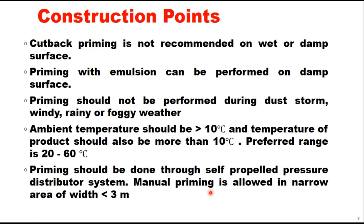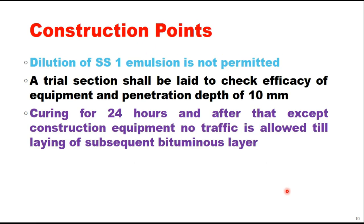Priming should be done through a self-propelled pressure distributor system. Manual priming is allowed only in narrow areas of width less than 3 meters. Dilution of SS1 emulsion is not permitted at site. A trial section shall be laid to check the efficiency of equipment and penetration of the emulsion up to a depth of 10 millimeters. Curing for 24 hours is required, and after that no traffic is allowed except construction equipment until the subsequent bituminous layer is laid. The general surface should be swept by power brooms or mechanical sweepers and made free from dust and loose materials.